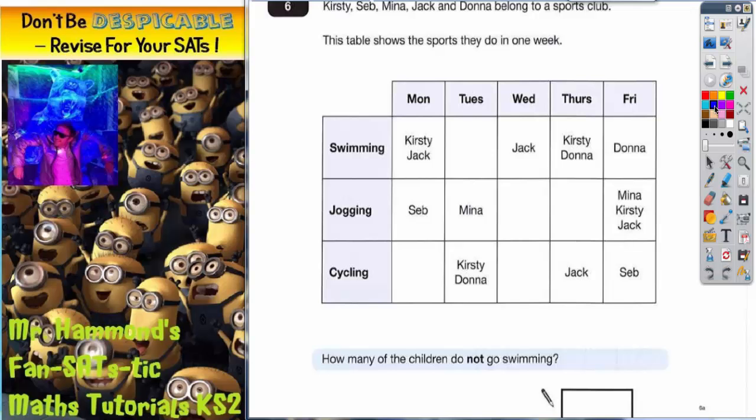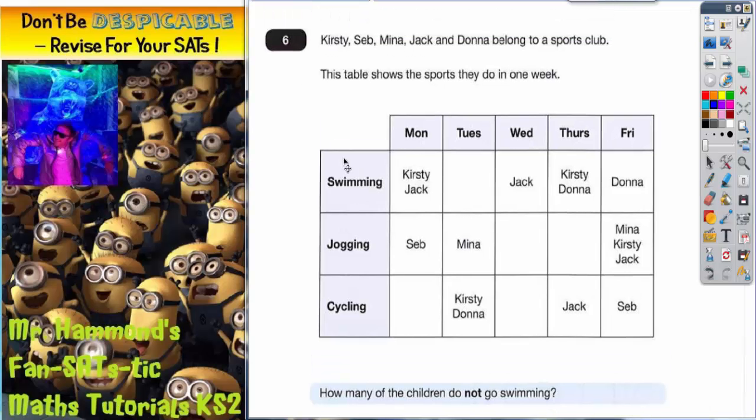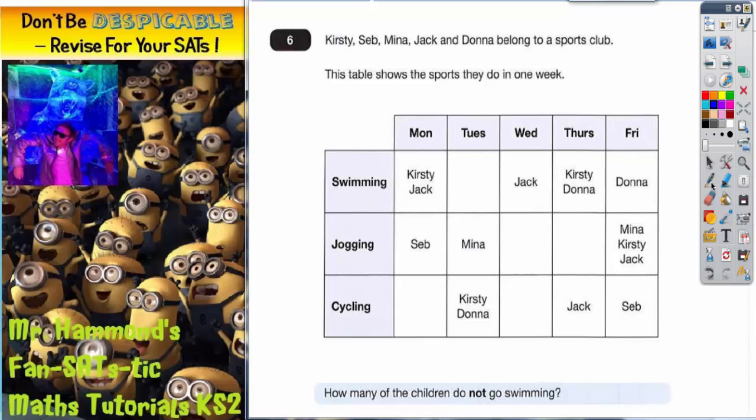I'm going to use blue for this question. So easiest thing to do is to highlight the row for swimming, which is this top row here. Go through the names one by one and see if they appear in that row. And if they do, I'll tick it at the top here.